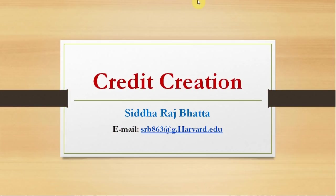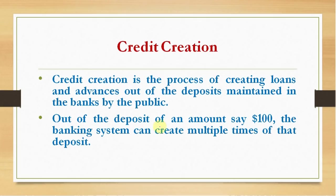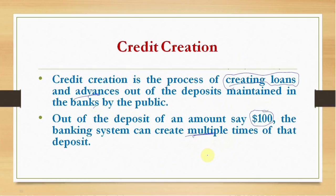In this video I will explain how the banking system in the economy creates credit out of the deposits maintained in the system. Credit creation is simply the process of creating loans and advances out of the deposits maintained in the banking system by the public. For example, the public makes a deposit of $100 in the banking system and the system creates loans and advances to other customers out of that $100. This is called deposit creation or credit creation.